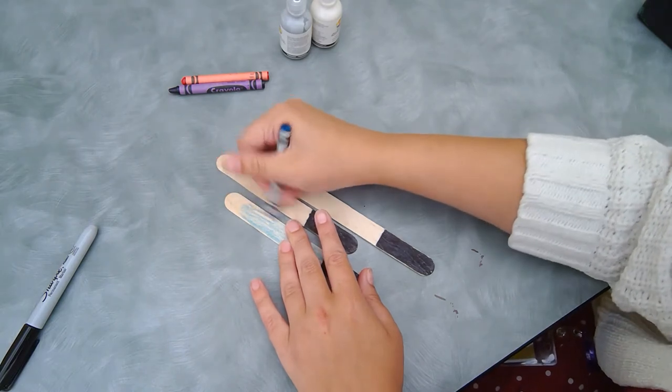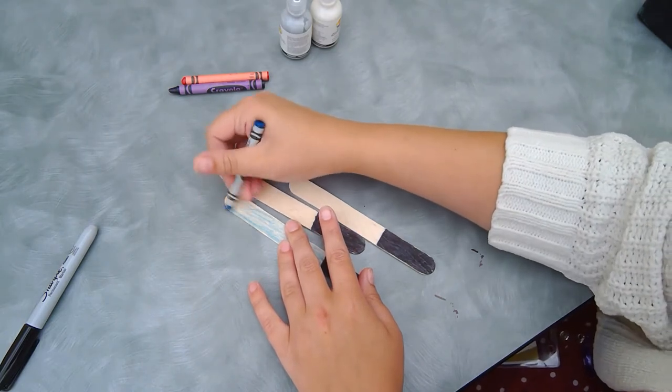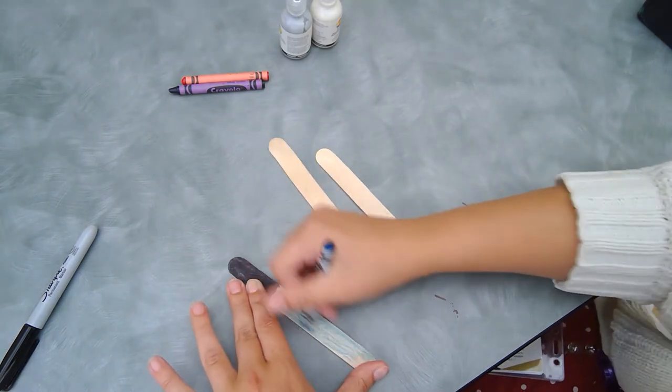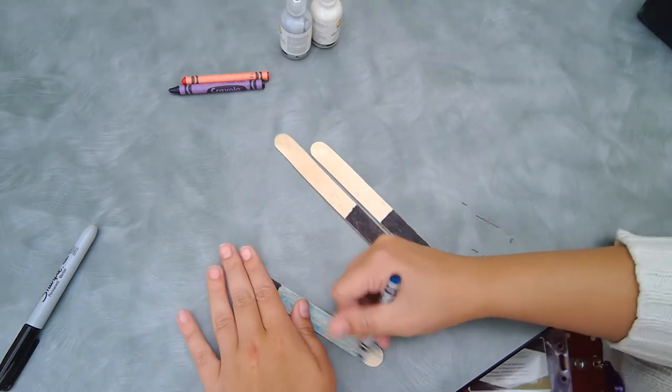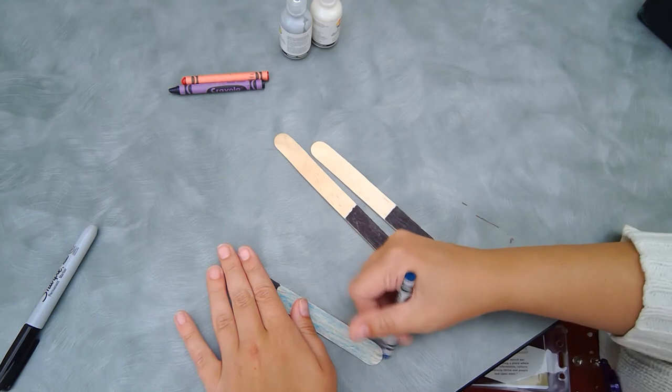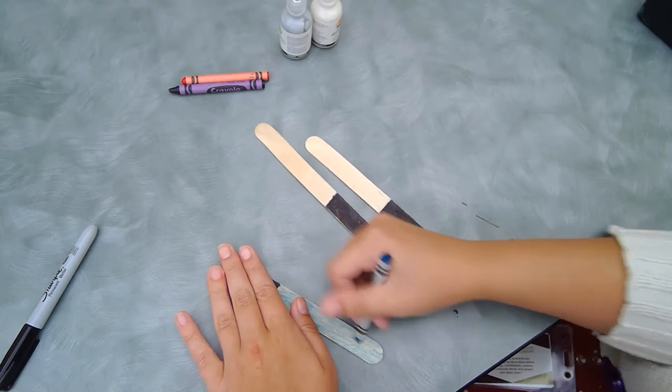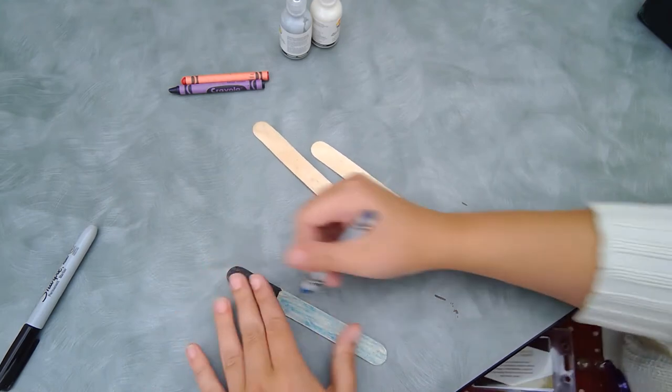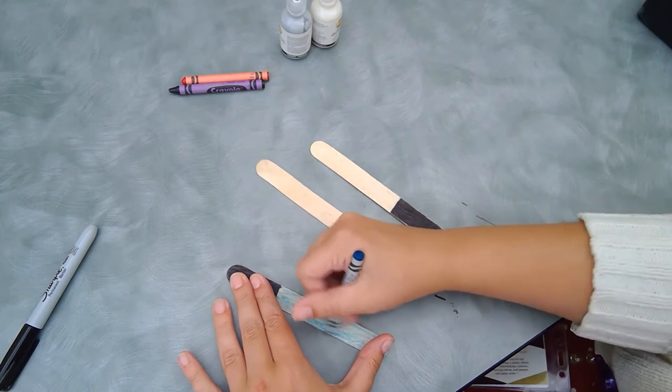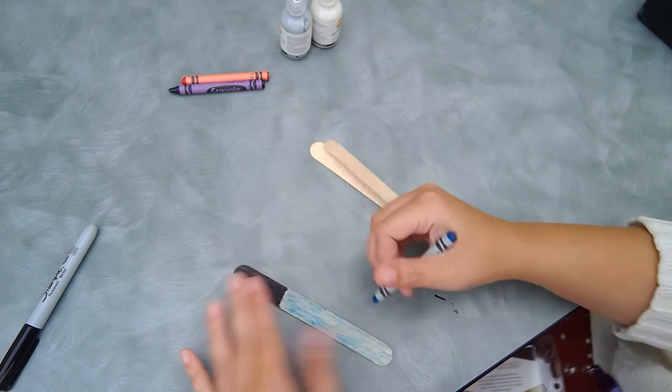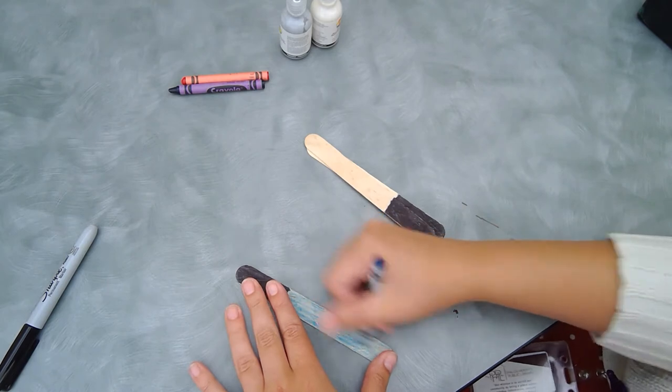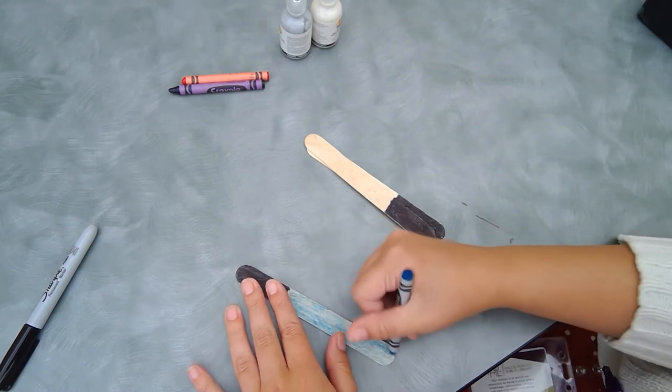So you might want to go over them a couple times with your colors. I like the way that crayons look on this project because it gives you a more layered look to your lightsaber. Like if you were to just do paint, there wouldn't be any of the wood shining through or poking through. And I think that's what makes them really cool, is that they do kind of look like there's some light going through them.